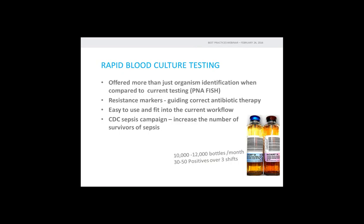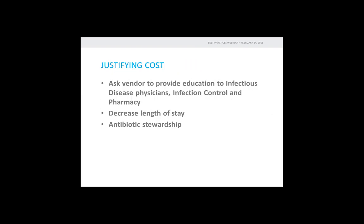Why did we decide to implement molecular testing for blood cultures? Our current technology was the PNA FISH, which was very simple and very limited. Multiplex assays offer a greater variety of bacterial identification and the addition of resistant markers. Resistant markers offered us the next step to guide antibiotic therapy sooner and to improve management of patients with sepsis. Justifying the cost of a molecular system for blood cultures can be harder, as cost savings are not usually associated with the laboratory, such as decreased length of stay and antibiotic stewardship.